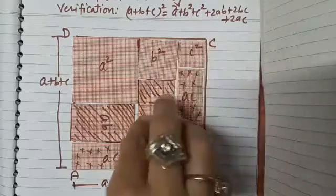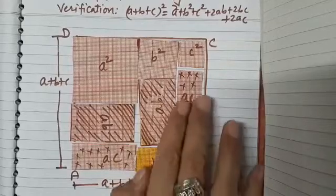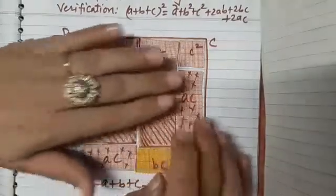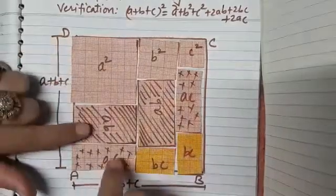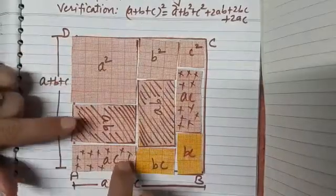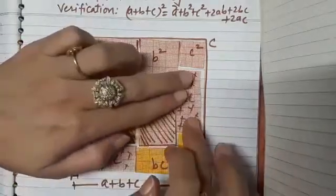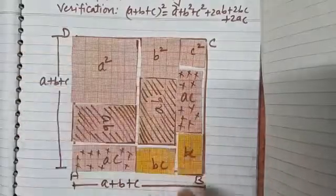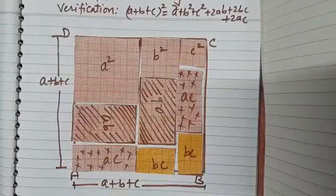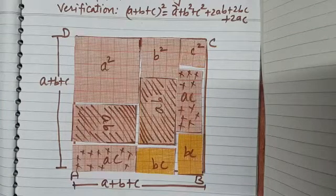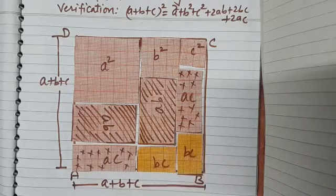So you may get another representation, but the result is the same: all the pieces representing the areas A², B², C², two pieces of AB, two pieces of BC, and two pieces of AC completely cover the square ABCD whose side is A+B+C. I hope you have understood the activity. Try to do it on your own.